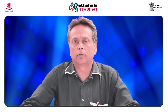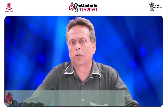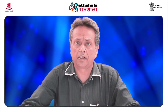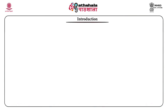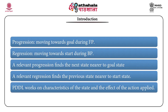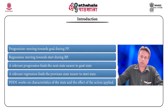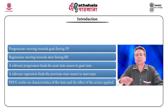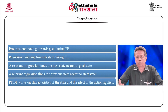Welcome to the 17th module of AI. In this module we extend our discussion about planning from the previous module. We will be talking about progression, regression, and a few other things. Progression is about moving further in the state space towards the goal; regression is coming back from the goal state. In forward planning we use progression, and in backward planning we use regression.